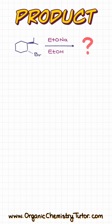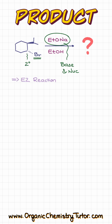What's going to be the product in this reaction? We have our sodium ethoxide, which is both a base and a nucleophile. Our leaving group in this case, the bromine, is sitting on the secondary carbon, which means that we are looking at the E2 reaction here.